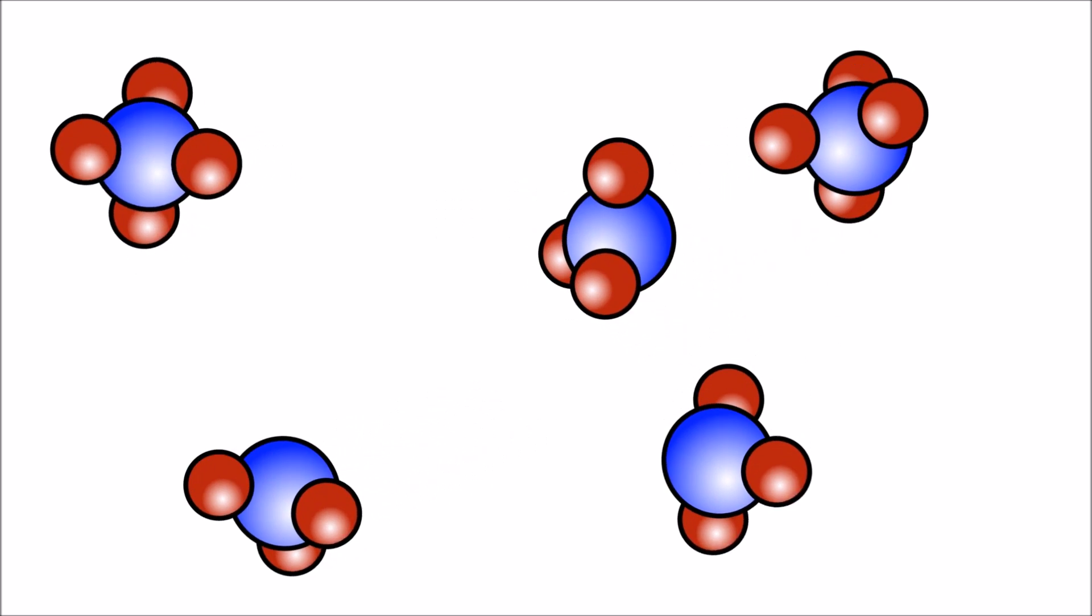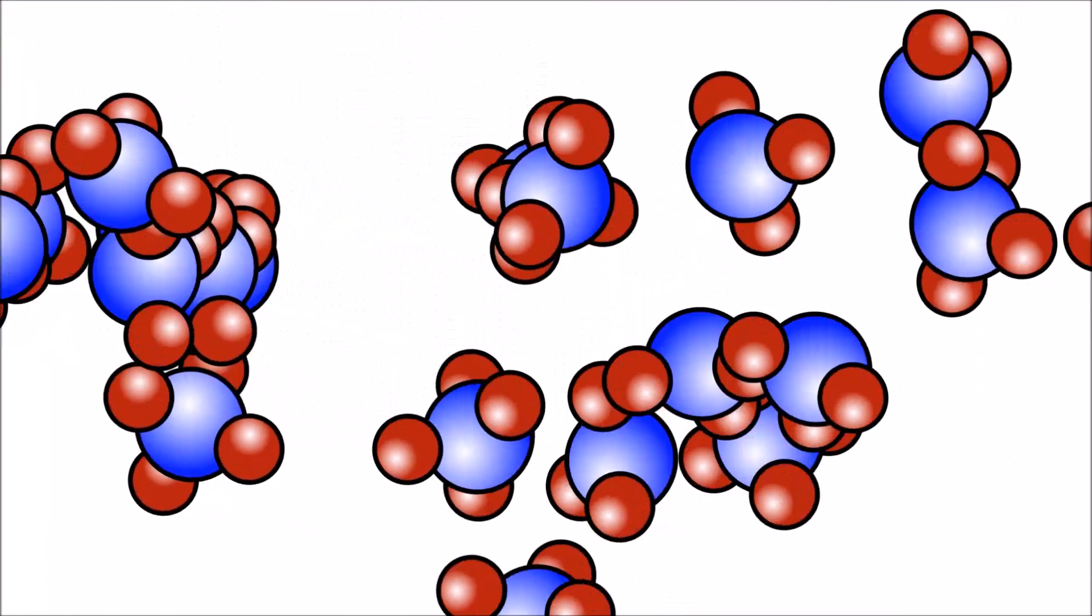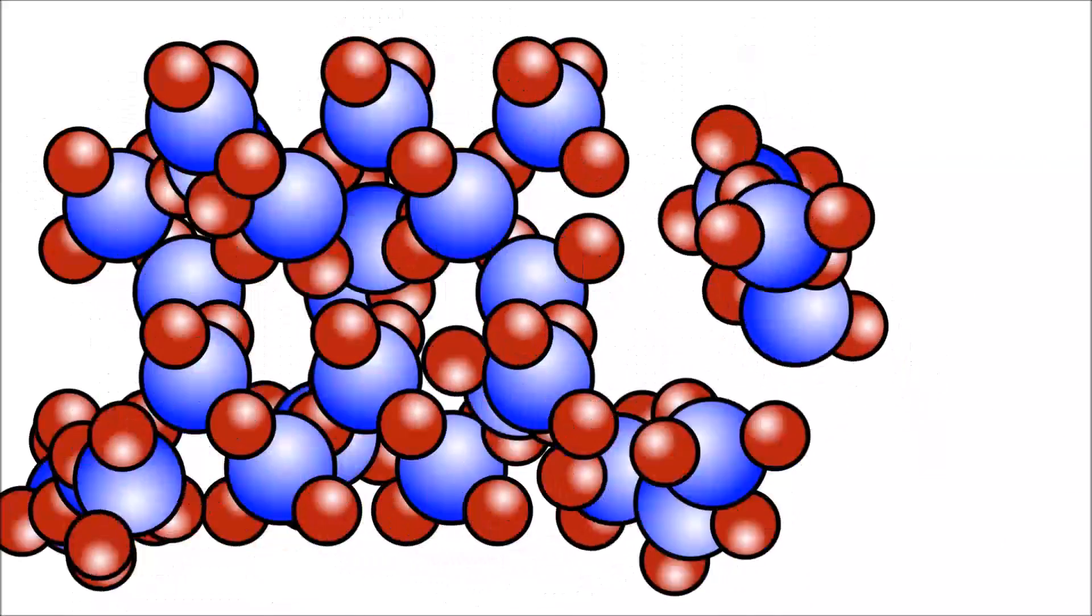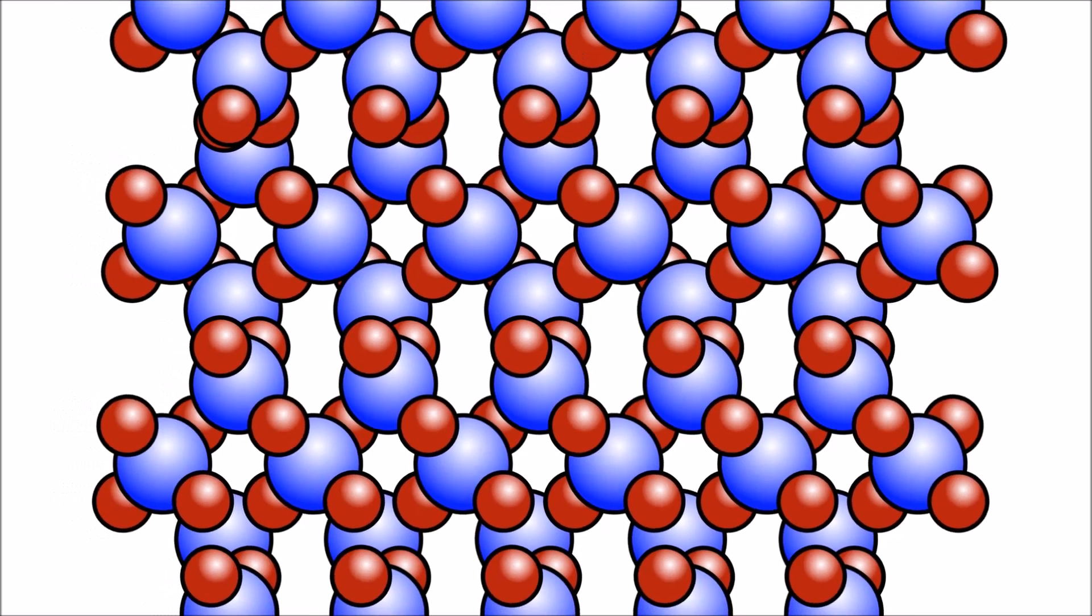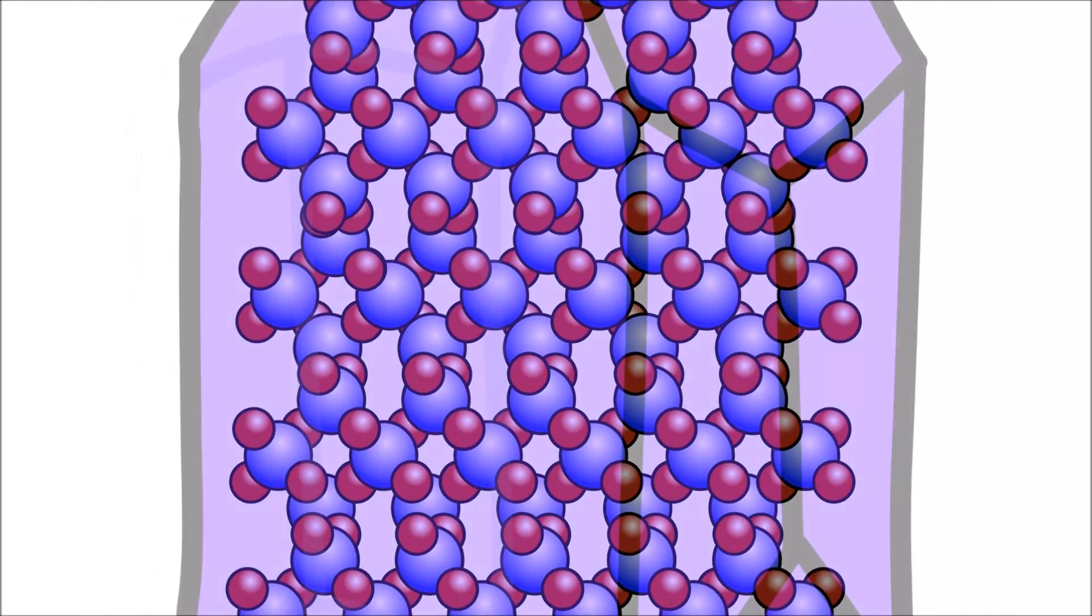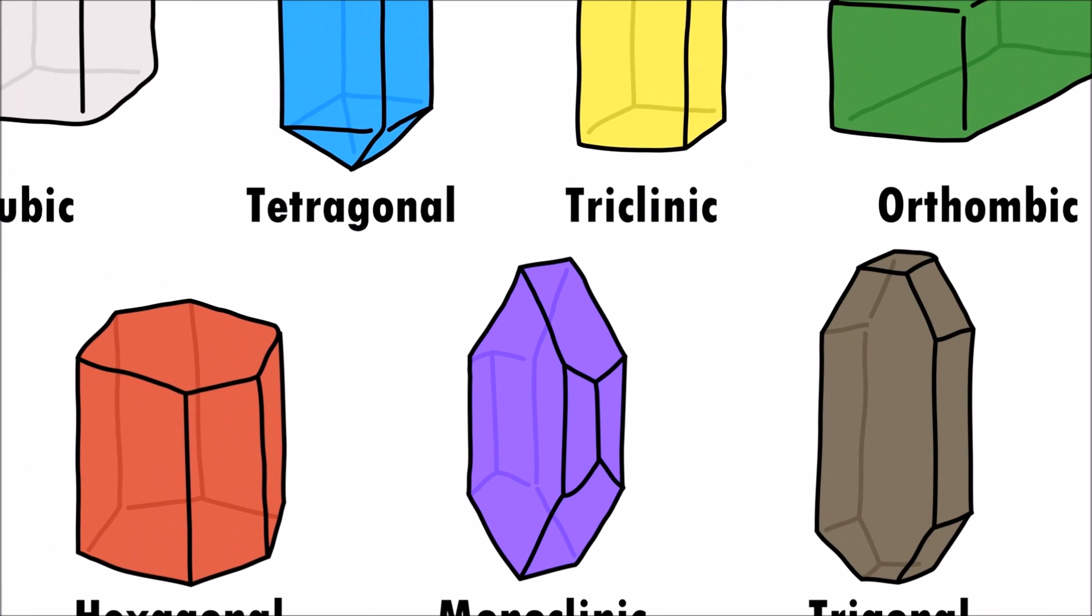Crystals are objects made up of tiny particles. These particles fit together in a repeating pattern. Because different crystals are made up of different particles, the repeating patterns of these particles form all sorts of unique shapes.